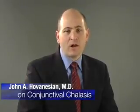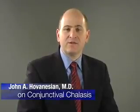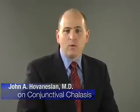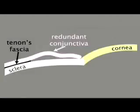Chalasia or chalasis refers to relaxation of muscles or tissue. Most physicians are familiar with this term because of its use in achalasia of the esophagus, which causes difficulty swallowing. In the eye condition, the chalasis refers to redundancy of the tissue that lines the eye surface, called conjunctiva. We believe this is caused by an absence of tenon's fascia, the microscopic connective tissue that holds the conjunctival mucous membranes to the eyeball. In the absence of this tenon's fascia, the conjunctiva becomes loose and redundant.